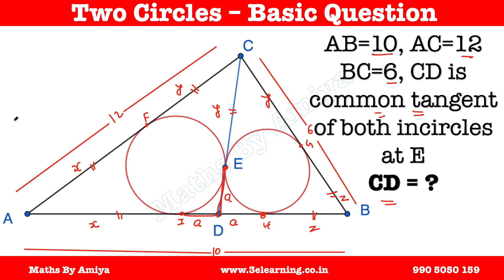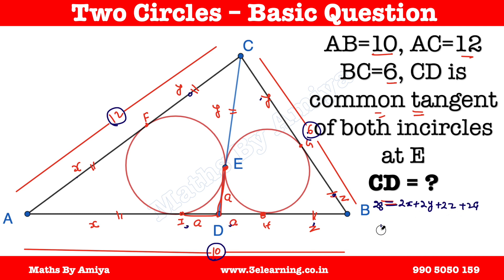Now we have all values as variables. We add all the sides: 12 + 6 + 10 = 28. So 28 equals 2X + 2Y + 2Z + 2A. Dividing by 2: 14 = X + Y + Z + A. Since X + Y = 12, substituting gives Z + A = 2.